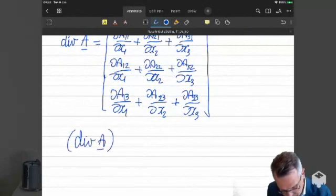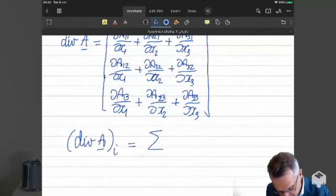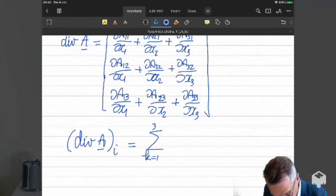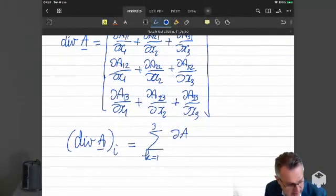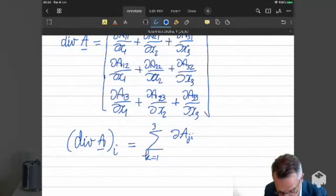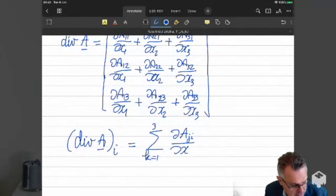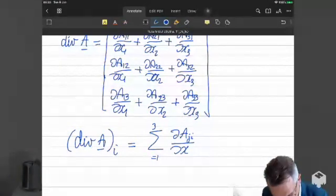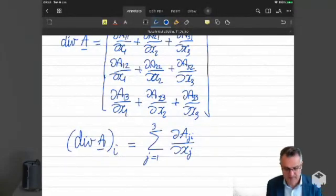So it's hard to memorize this. It's easier if you look at the components. The i-th component of the divergence of A is going to be the sum over j of dA_ji dx_j. Oh, sorry. I sum over j.